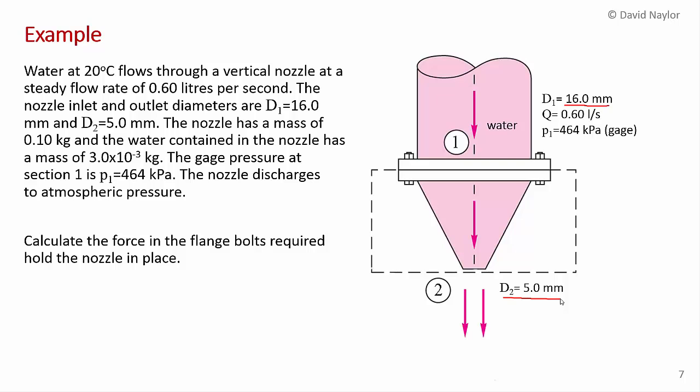The nozzle has a mass, so the metal nozzle has a mass of a tenth of a kilogram and the water contained in the nozzle, so just in the nozzle section, has a mass of 3 times 10 to the minus 3 kilogram.